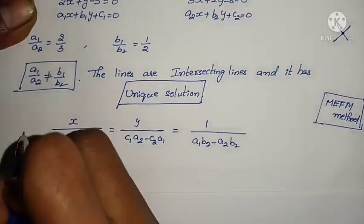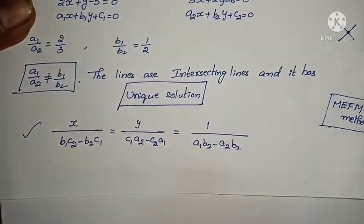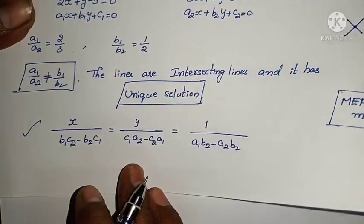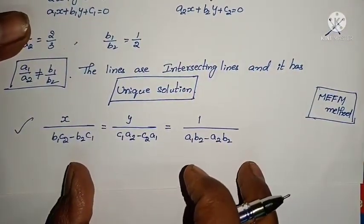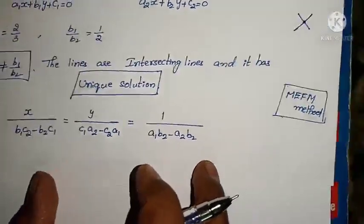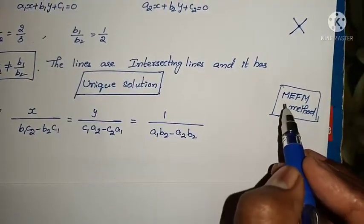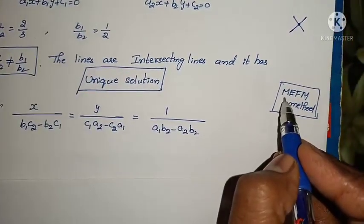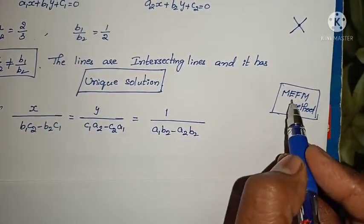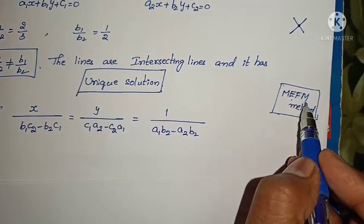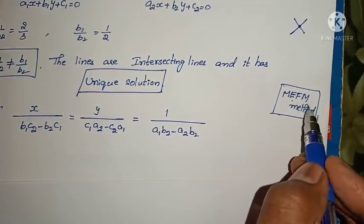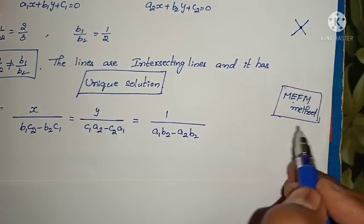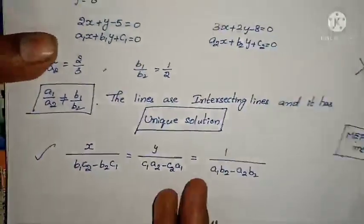But if we forget this formula, we can't do the problem. For that, I am telling you a shortcut to remember — that is MEFM. M means middle, E means N (end/constant), F means first, and again M means middle. MEFM — very easy to remember. If you remember this, you can solve it very easily.